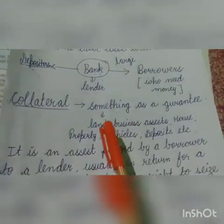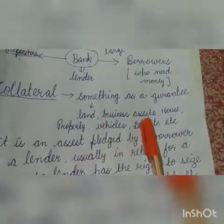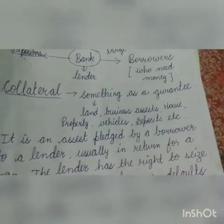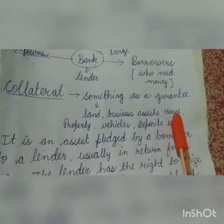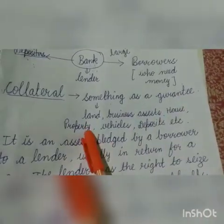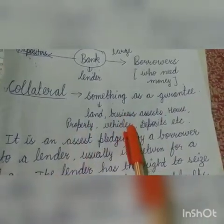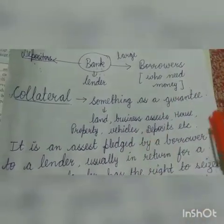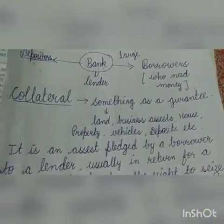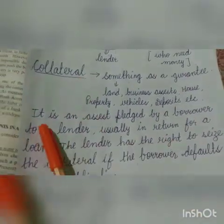Ab something mein kya aagya — koi bhi land ho sakti hai, koi bhi business asset ho sakti hai, koi bhi apna ghar jo ho sakta hai, properties ke paper ho sakti hai, koi bhi vehicle ho sakti hai, koi bhi deposit ho sakti hai, aur kaafi zhaadha aur cheezein bhi ho sakti hain.